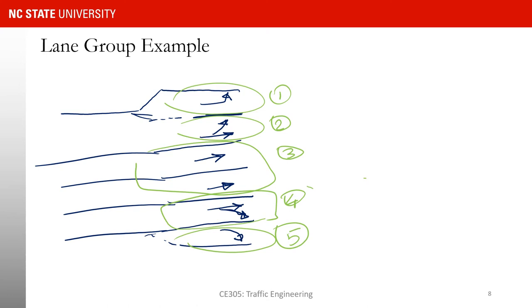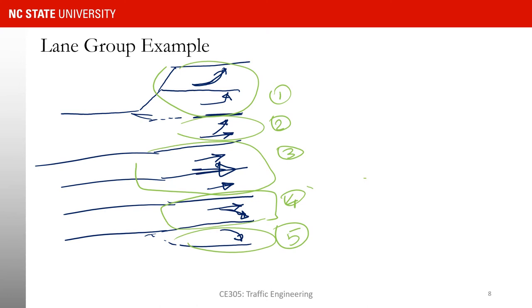What if I had another exclusive left turn lane added? Then those two would form one lane group. What if I had yet another lane added? Then those three would form the same lane group. I hope this example clarifies the concept of lane groups.